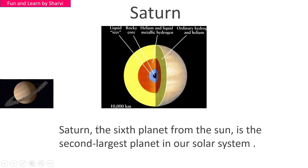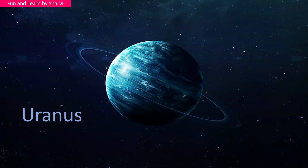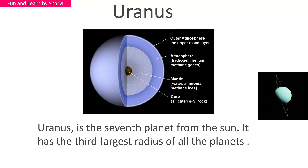Now let's move to Uranus. Uranus is the seventh planet from the sun and has the third largest radius of all the planets. Its layers include the outer atmosphere, upper cloud layer, an atmosphere of hydrogen and helium, and a mantle of water, ammonia, and metallic gases.